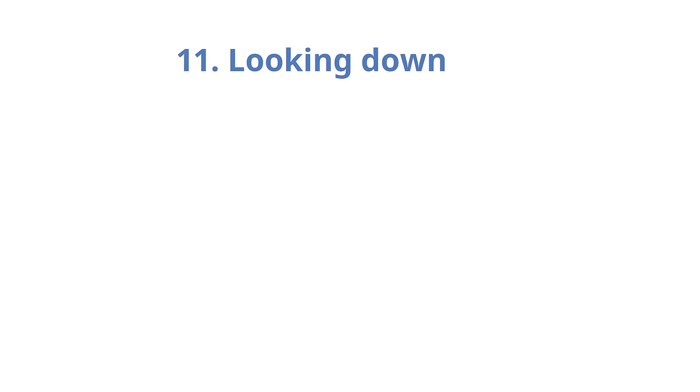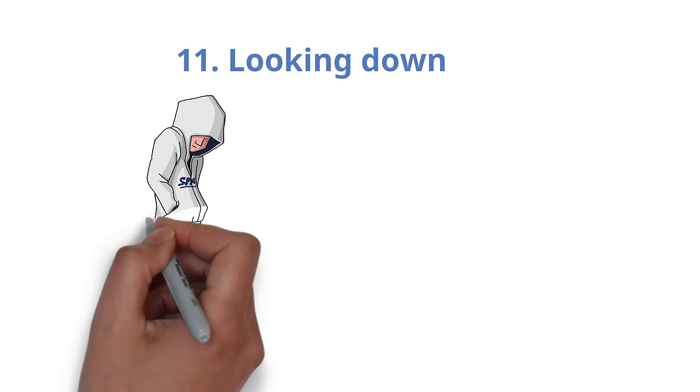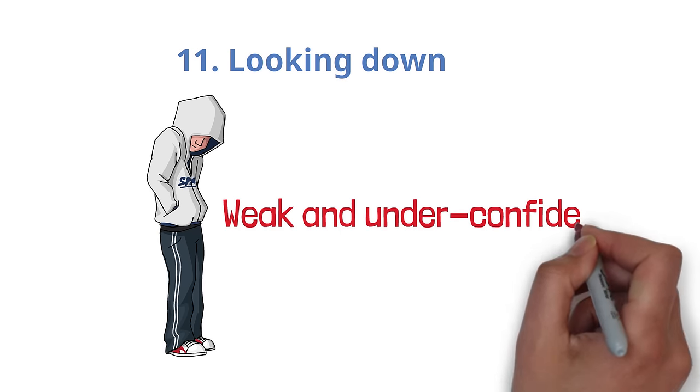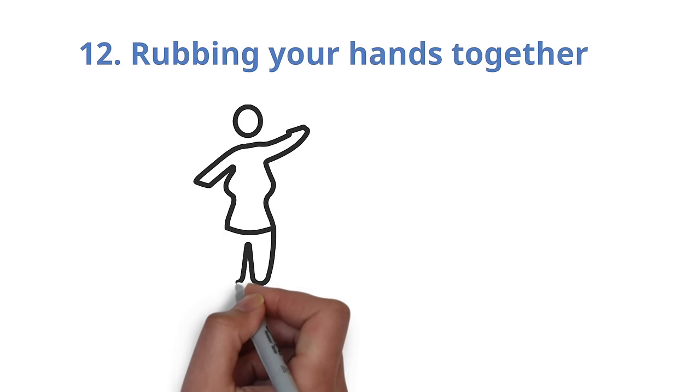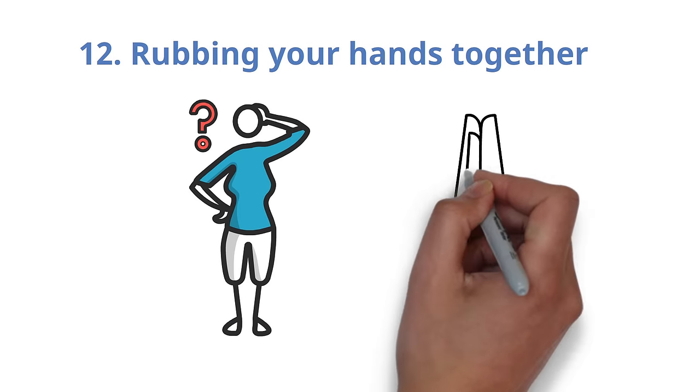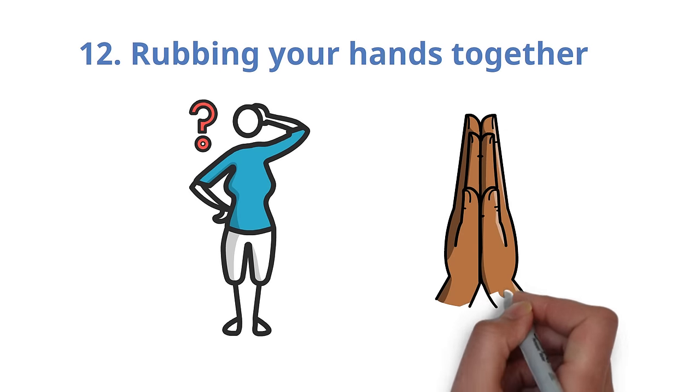Number 11. Looking down. Looking at the floor or ground makes you appear weak and underconfident. Number 12. Rubbing your hands together. Want to express your enthusiasm for a new project? Simply rub your hands together briskly.